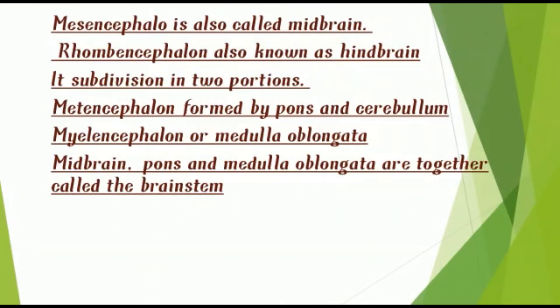Mesencephalon is also called the midbrain. Rhombencephalon is known as the hindbrain. In rhombencephalon, it is subdivided into two parts: metencephalon, which is formed with pons and cerebellum, and myelencephalon. Together, the midbrain, pons, cerebellum, and medulla oblongata become the brainstem.